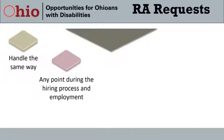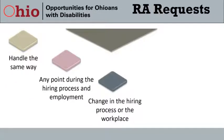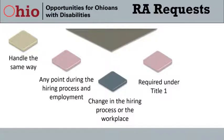A reasonable accommodation is a change in the hiring process or the workplace that removes a barrier and enables an individual with a disability to participate in hiring or work-related activities. Employers are required under Title I to provide reasonable accommodations when needed, unless doing so causes an undue hardship. The reason an employee who did not need an accommodation before the pandemic may request one now is because something changed — either in the disability or in the workplace.